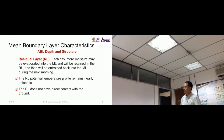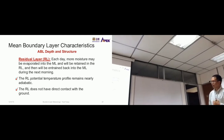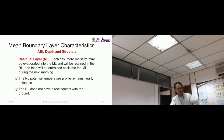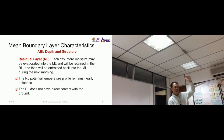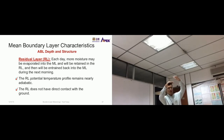The residual layer potential temperature profile remains nearly adiabatic, and the residual layer does not have direct contact with the ground. During the day it becomes the mixed layer, and at night it reverts to the residual layer — and this cycle continues.